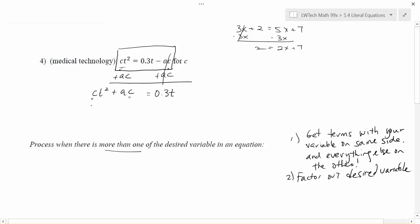So in this case, because each of these terms has a C, we can pull it outside, and then we put in parentheses what's left behind. So this is a T squared—C times T squared to get the CT squared, plus C times A to get the AC term. And this will be equal to 0.3T.